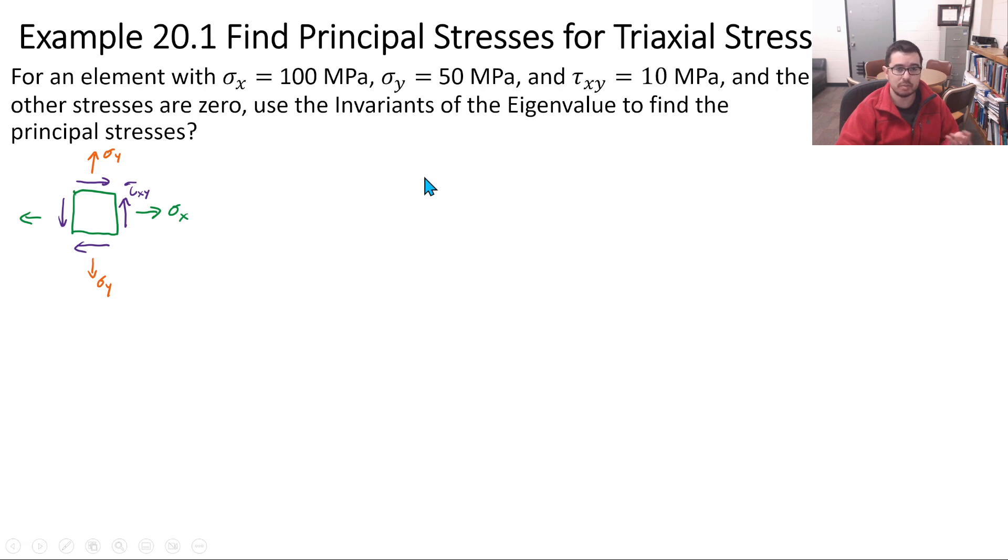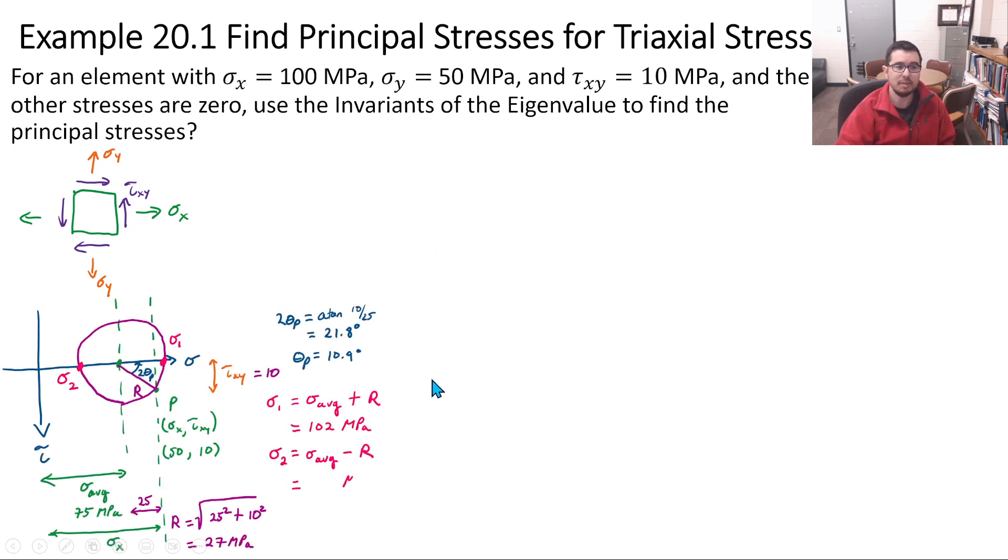We're going to attempt to use the invariants of the eigenvalue to find the principal stresses or solve the eigenvalue problem using Python, using a computer. Do you have to do that here with the computer? No, because this is actually a 2D state of stress and we could use Mohr's circle like we did last time to figure out sigma 1 and sigma 2, the principal stresses. But I thought this was a good example because we're going to essentially use these new techniques to check that what we did when we were calculating the principal stresses in 2D using Mohr's circle, to check that we did that correctly.